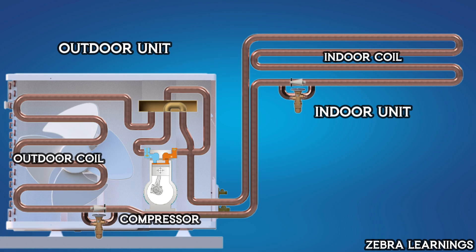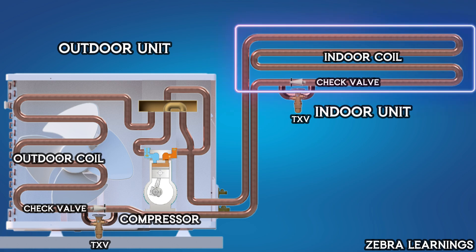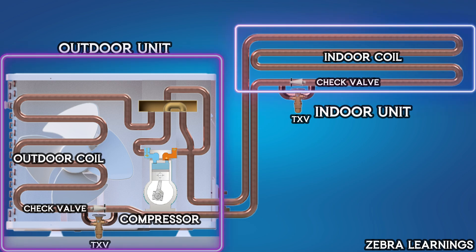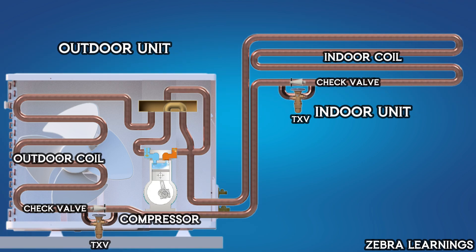But in addition to these, a heat pump has two extra check valves or non-return valves and two expansion valves. One expansion valve and one check valve are located in the indoor unit while the other set is in the outdoor unit. Additionally, the system includes a four-way reversing valve with two inlets and two outlets.